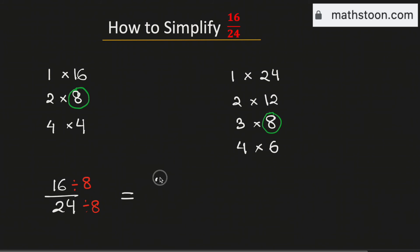By doing so, we get 2 divided by 3. And this is the simplified reduced form of the fraction 16 divided by 24. And this is our final answer.